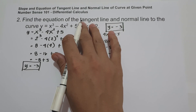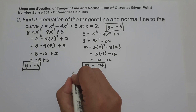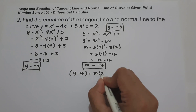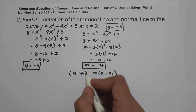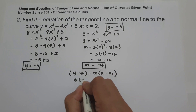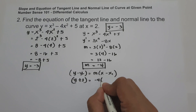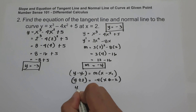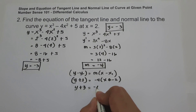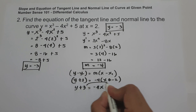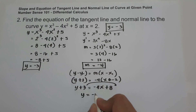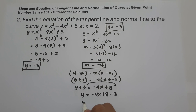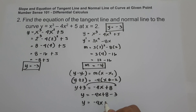Using point-slope form with point (2, -3) and slope negative 4: y minus (-3) equals negative 4 times x minus 2, so y plus 3 equals negative 4x plus 8. Moving 3 to the other side gives y equals negative 4x plus 5. That is the equation of the tangent line.